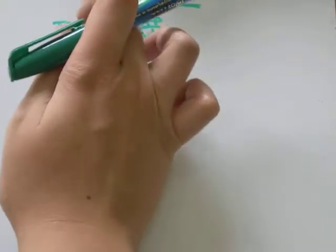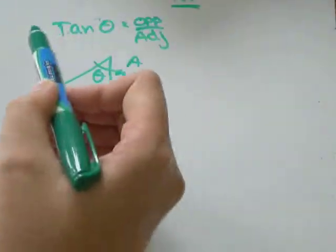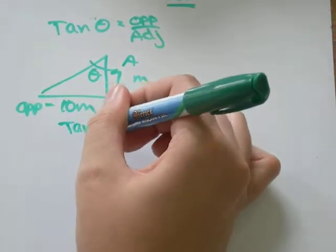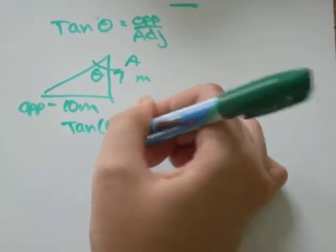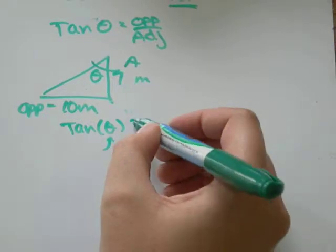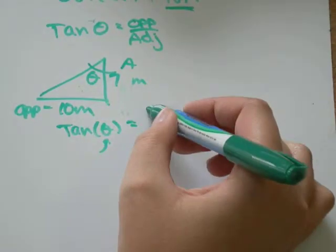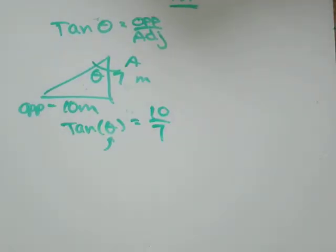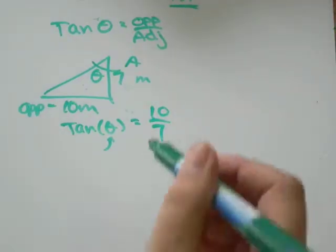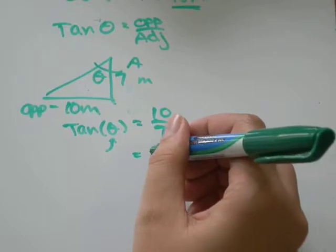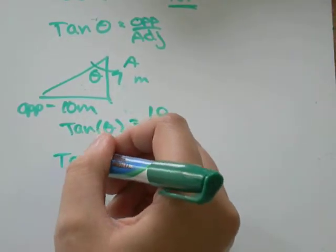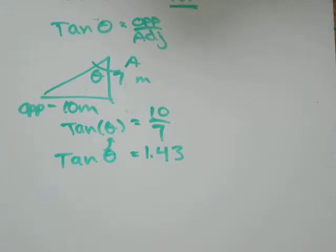What we'll do is, we're going to forget the negative 1 for a sec and just plug it into the formula we've been using. This time, theta is unknown. Opposite 10 and adjacent is 7. I'll just go in my calculator 10 divided by 7, and I'll get that equals the decimal 1.43.